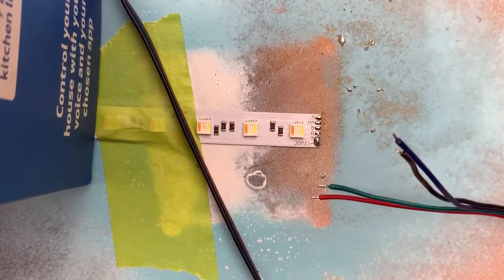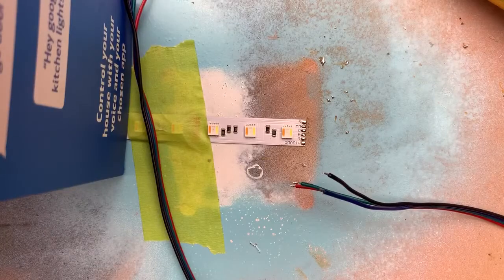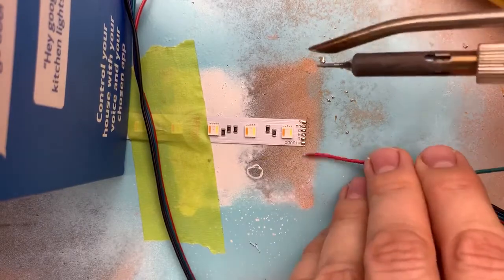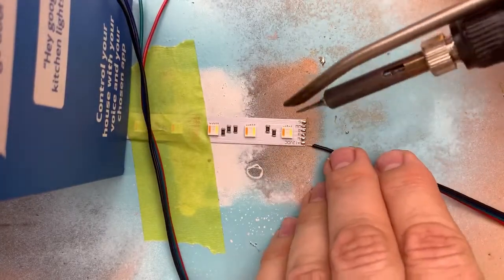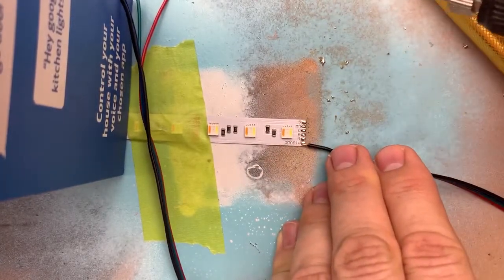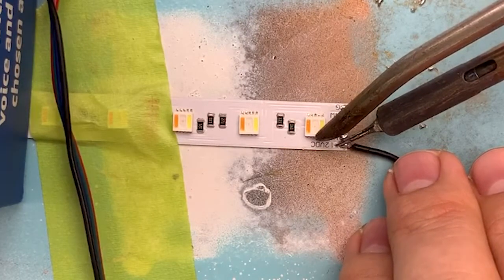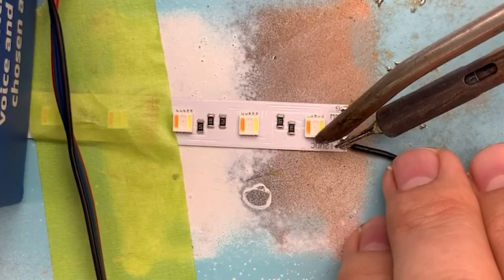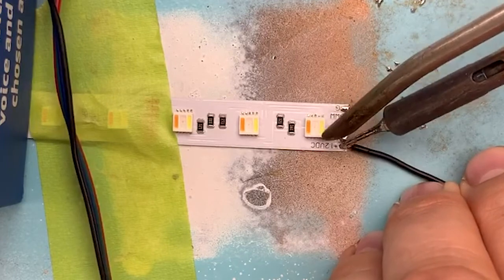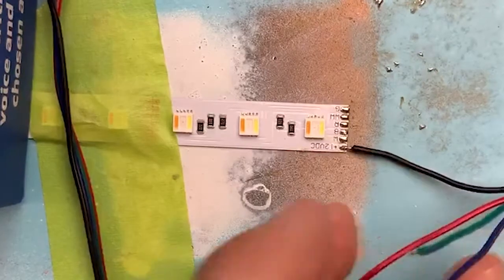Now we're going to solder these directly on. Black is our positive on RGB strip. I've got the end of the cable clamped down. Because we've pre-soldered these, you just want to soften the end. It doesn't need a huge amount of solder—it's just a matter of getting the heat through the cable and onto the pad. You can feel it melt in and then you've made a connection.